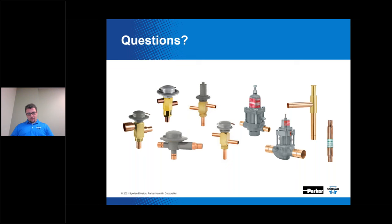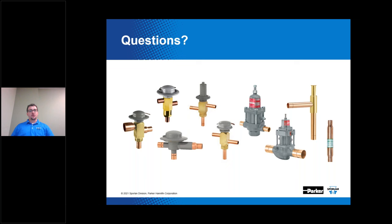Question: How could a field or maintenance technician measure the pressure drop across the TXV? What I would actually suggest is using our free online sizing software called Virtual Engineer on our website. You can punch in the exact operating conditions to see how much pressure drop you have across your distributor. Find your distributor model in the field, determine the pressure drop across the distributor, and backtrack to figure out the pressure drop across the expansion valve — because your combined pressure drop across the distributor and the expansion valve is knowable based on your high side pressure relative to your evaporator pressure.